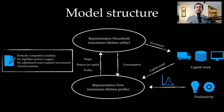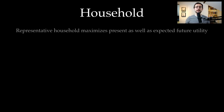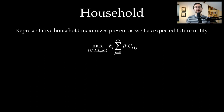To sum up: the household wants to maximize lifetime utility given the budget constraint, whereas the representative firm wants to maximize lifetime profits given a production function. The representative household maximizes present and expected future utility by choosing the paths for consumption C, investment I, labor supply L, and also indirectly capital K.